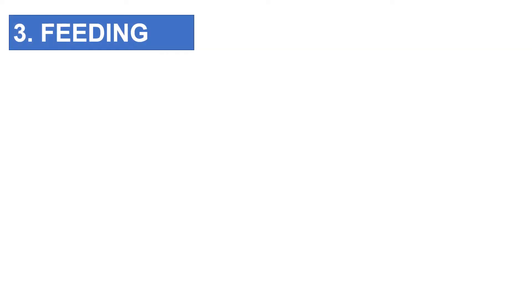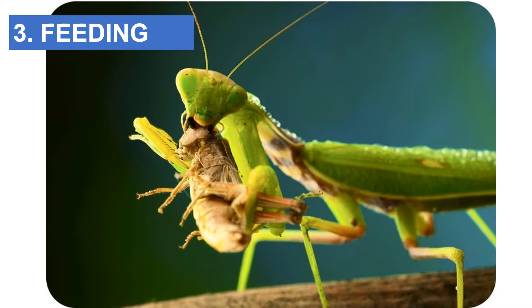Different species in an ecosystem are related and interact when one species can use the other species as a food source. For example, in predator-prey relationships, the predator will hunt another species called prey. Living organisms need to feed to be able to perform the other life processes. Some organisms can produce their own food, such as plants, while other organisms need to feed on other organisms to obtain their energy. We can therefore identify different feeding types in an ecosystem based on how the organism obtains its food.